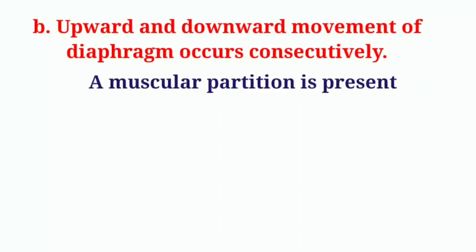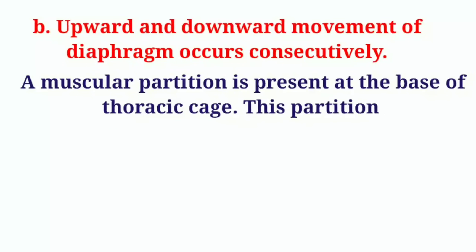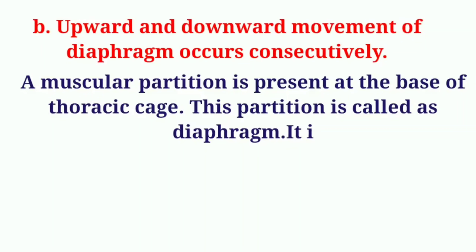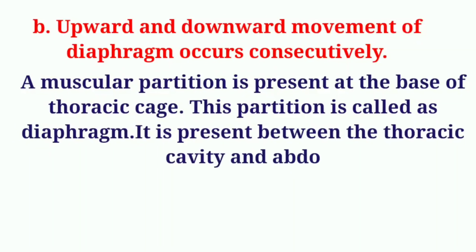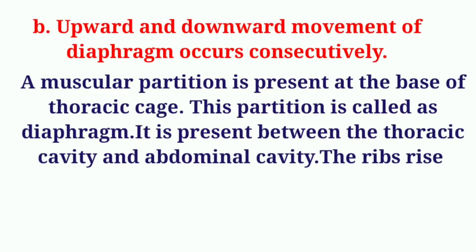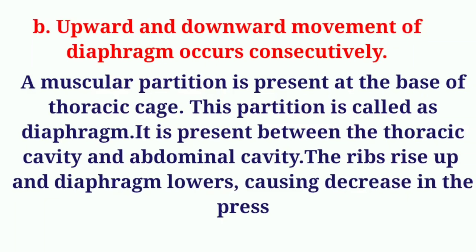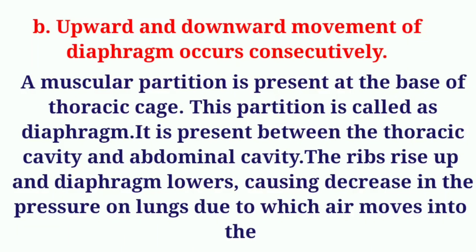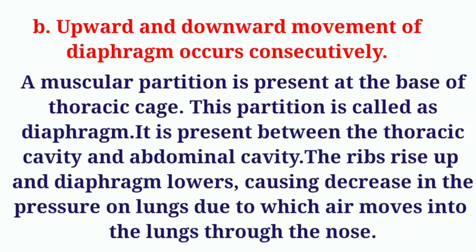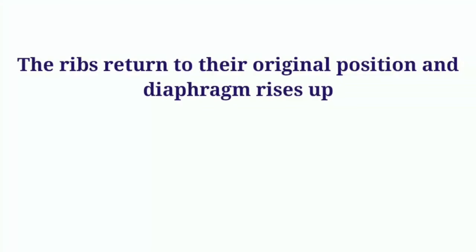A muscular partition is present at the base of the thoracic cage; this partition is called the diaphragm. It is present between the thoracic cavity and abdominal cavity. The ribs rise up and the diaphragm lowers, causing a decrease in the pressure on the lungs, due to which air moves into the lungs through the nose.